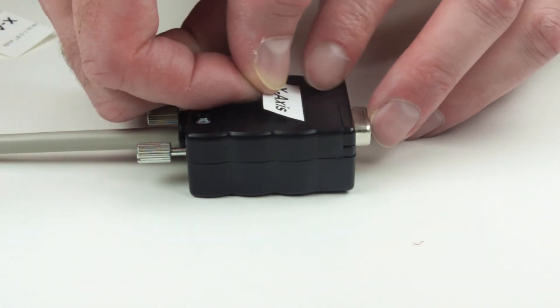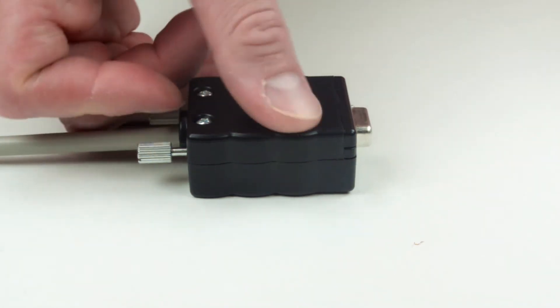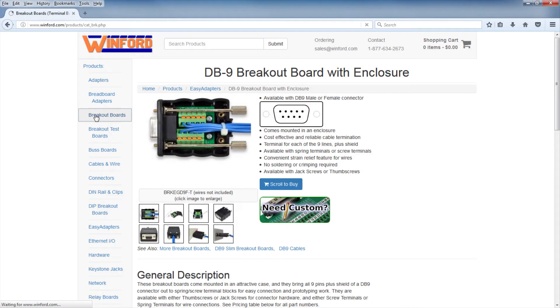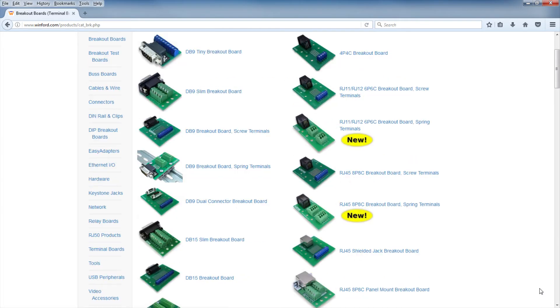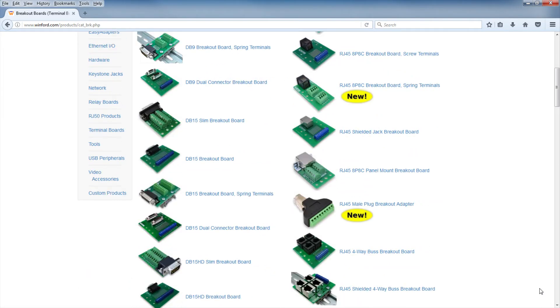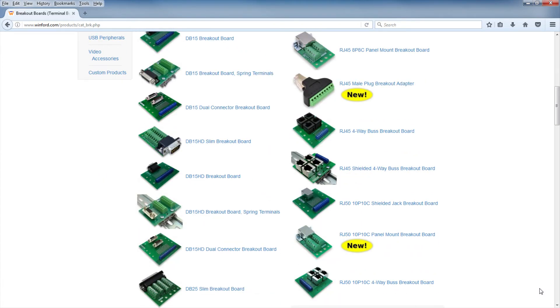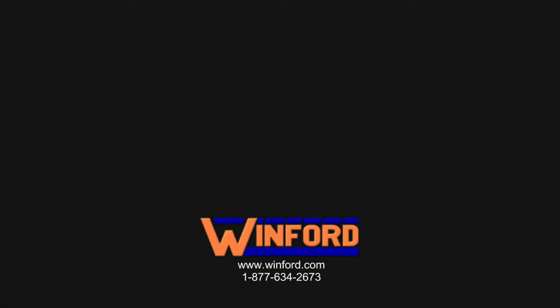The enclosure also has an area that can be used for customer labeling. See our web page to check out our other breakout boards. All boards are normally in stock and ready for immediate shipment. Volume pricing is available. Please call us today with any questions you may have.